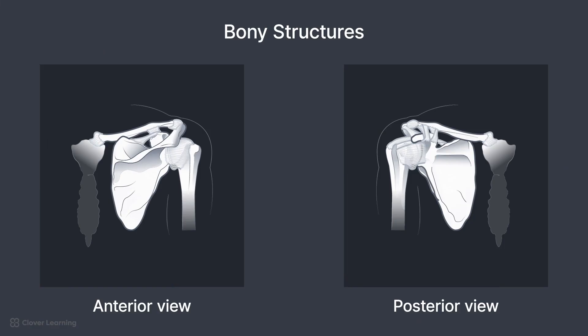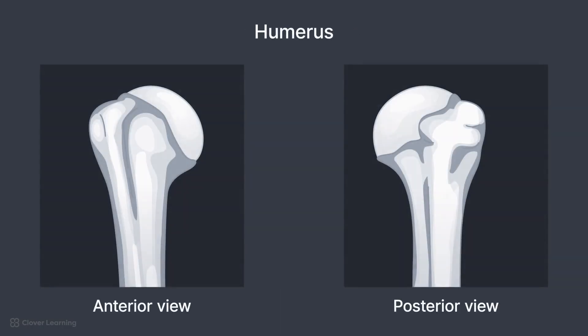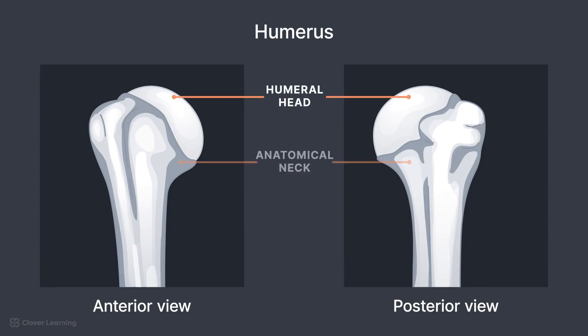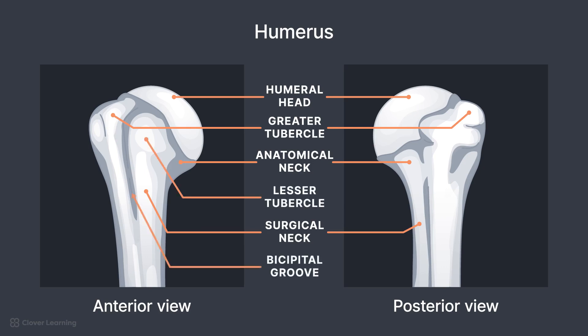The shoulder joint is classified as a ball and socket joint. It is comprised of the humerus, scapula, and clavicle. Important structures of the humerus near the shoulder joint include the humeral head, anatomical neck, surgical neck, greater tubercle, lesser tubercle, and intertubercular or bicipital groove.